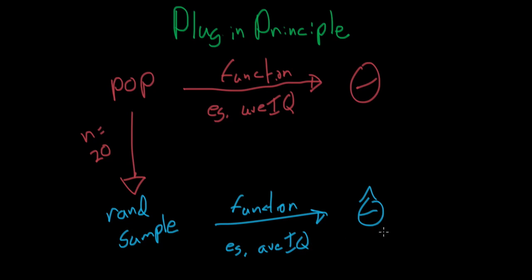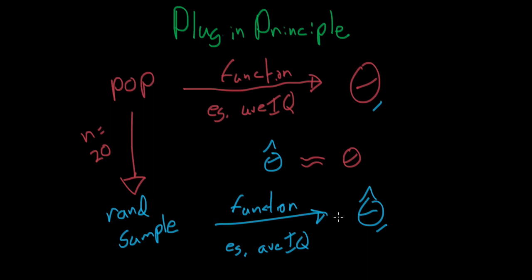What's the problem? The problem is: what's to say that theta hat — the average IQ of the sample — is anywhere near theta? What if we sampled from a population of five-year-olds? They can't really take the SATs, so they'd get a really terrible score. Or if we took a sample of the world's smartest people, like PhD students at a university, they'd get a very high IQ. These would be biased — they wouldn't be representative of the average IQ of the United States, and theta hat wouldn't necessarily be representative of theta.